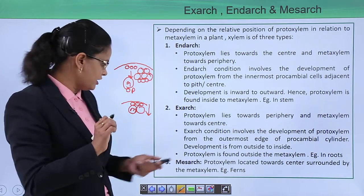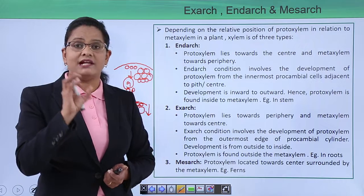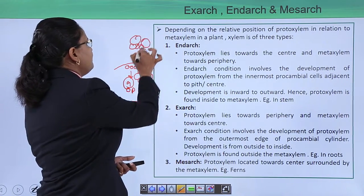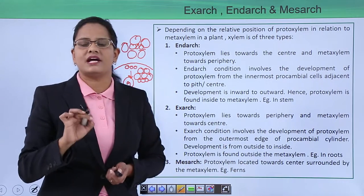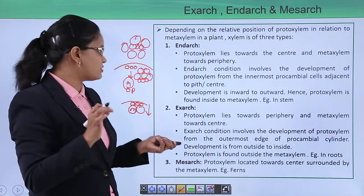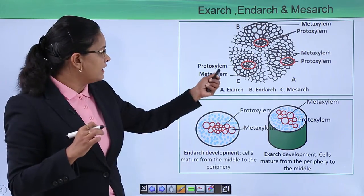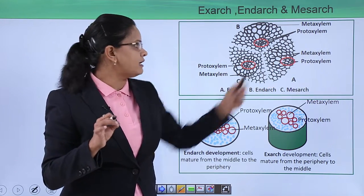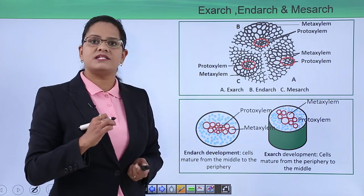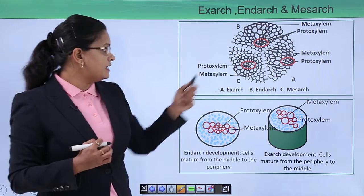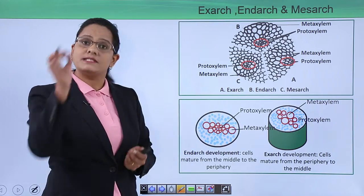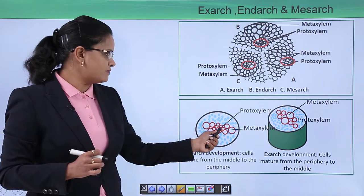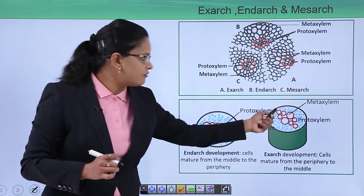In the mesarch condition, proto xylem is present in the center with meta xylem surrounding it. In the diagram: exarch has proto xylem towards the periphery and meta xylem at the center; endarch has proto xylem at the center and meta xylem outside; mesarch has proto xylem at the center with meta xylem surrounding it. The smaller cells are proto xylem and the bigger cells are meta xylem.